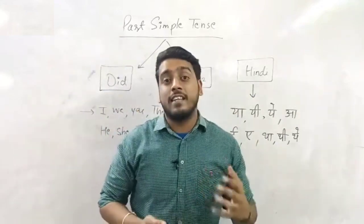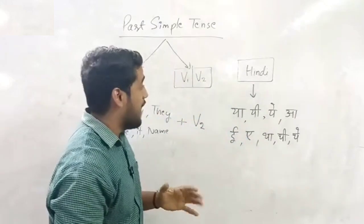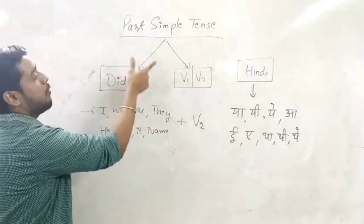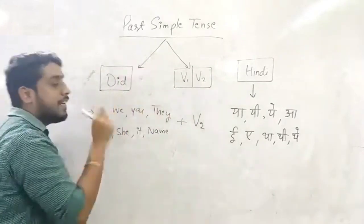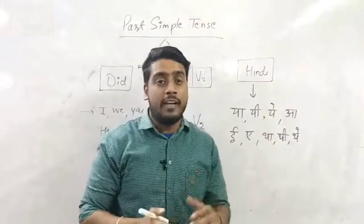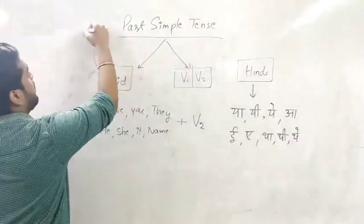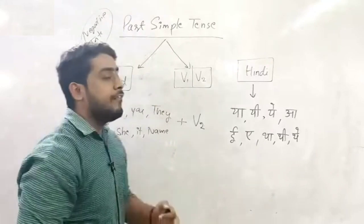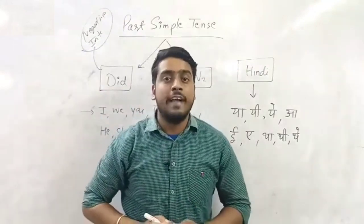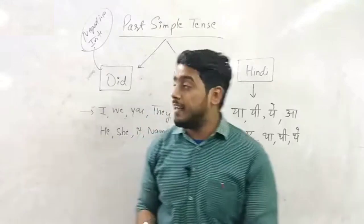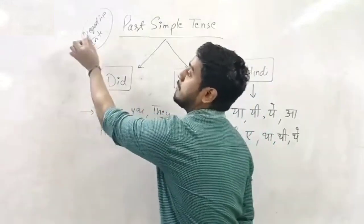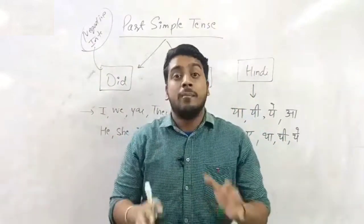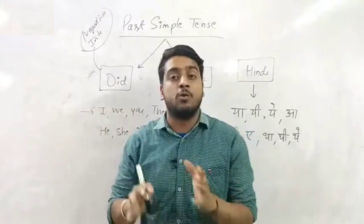In past simple, what are the things that we have to learn? The helping verb and the main verb basically. So if we talk about the helping verb of past simple tense, which is did. Let me tell you one interesting thing about did - we use it in negative sentences and interrogative sentences. Otherwise, we do not use did in simple sentences. So we learned one thing that did will be used only in negative and interrogative sentences.